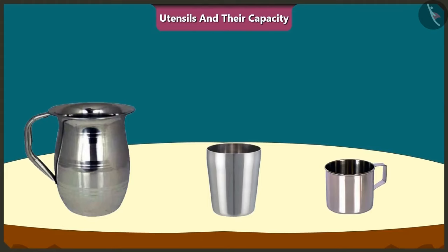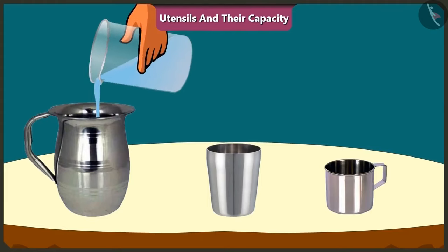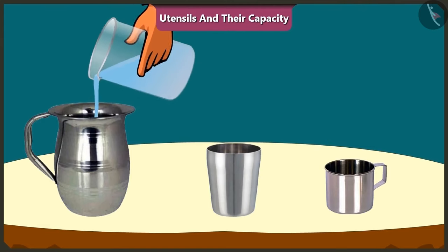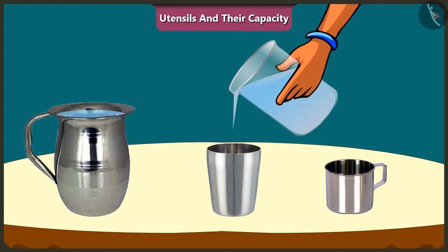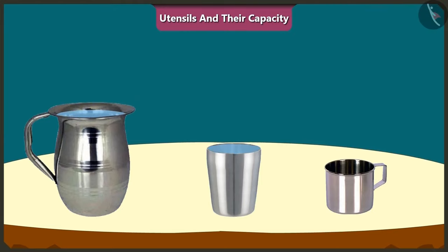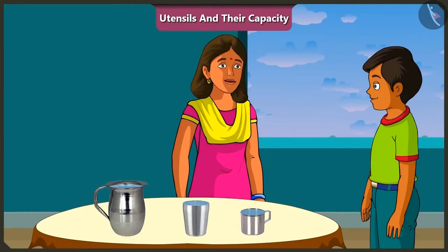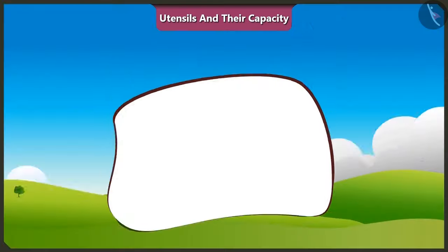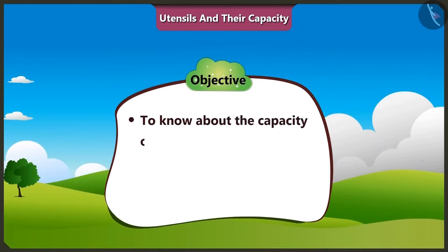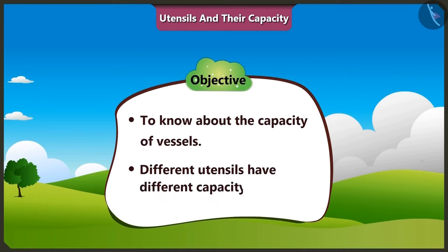Come on, let me explain it to you. I will pour water in this jug, in this glass, and in this mug. The amount of water that can fill each of these vessels respectively is called its capacity. So, let us know more about the capacity of vessels and understand how different vessels have different capacities.